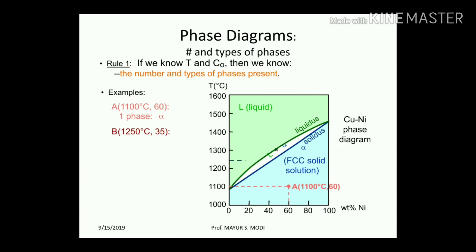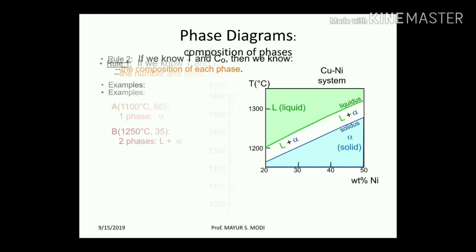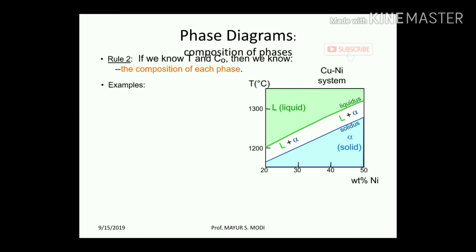At point B — 1250°C and 35% nickel — two phases are present: liquid plus alpha, as shown in the diagram. Rule number two: if we know temperature and composition, then we know the composition of each phase.